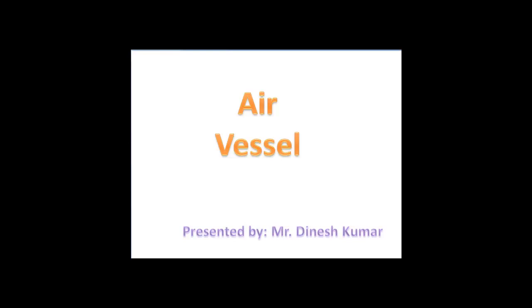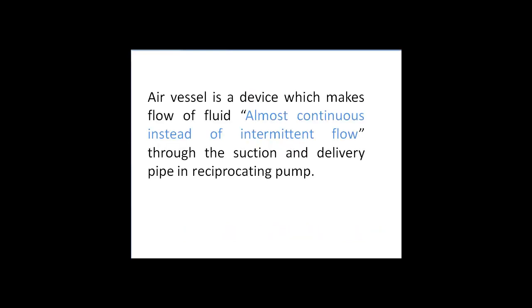Hello students, today's topic is air vessel. The use of air vessels is in the reciprocating pump. It makes the continuous motion of fluid from the sump to the reservoir instead of intermittent flow. When we are not using an air vessel, the flow of fluid to the reservoir is not continuous — that is intermittent.